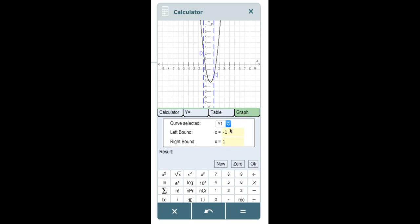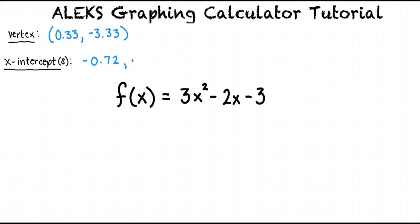Then enter our left bound of 0 and our right bound of 2. Finally, we will click this button labeled zero. This calculates that the rightmost x-intercept is 1.38742589, which when rounded to the nearest hundredth gets us 1.39.